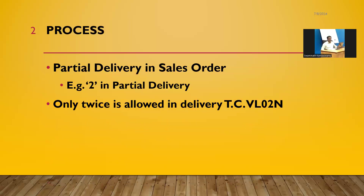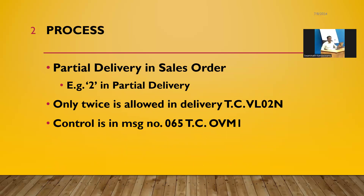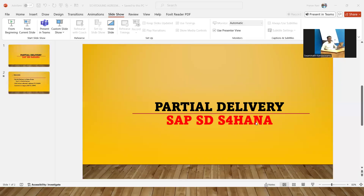Only twice is allowed. If I give partial delivery twice and more than twice it should give an error message. The control is in transaction code OVM1, message number 065. I will show you that in the live system.